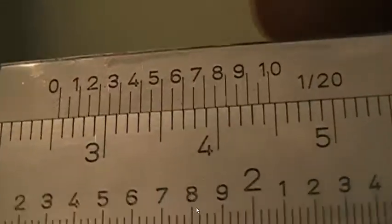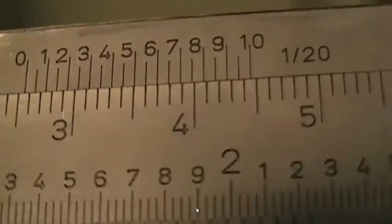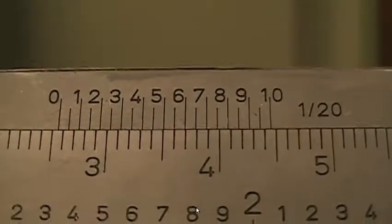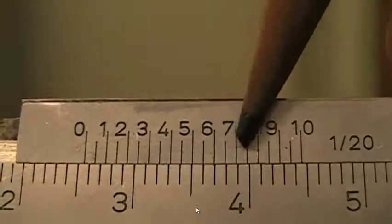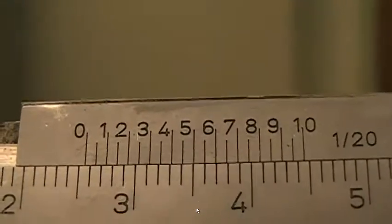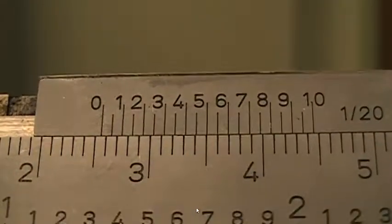What we're going to do is look for a line on this top scale that lines up directly with one underneath it. Notice that most of them don't line up exactly with something underneath, but one of those will line up the best with something directly underneath it.